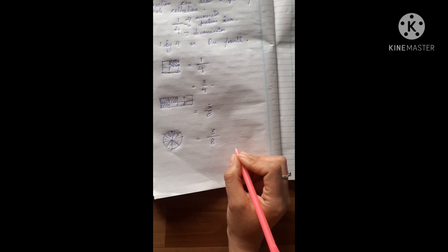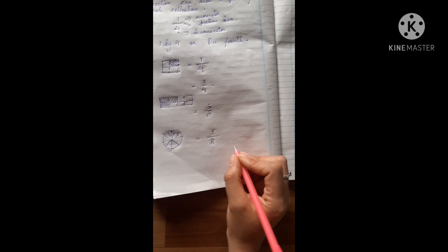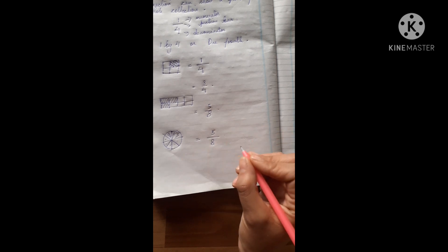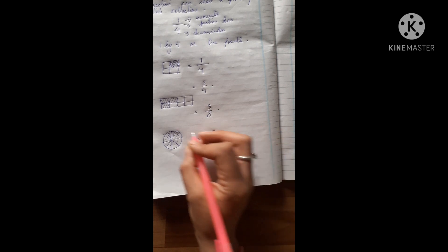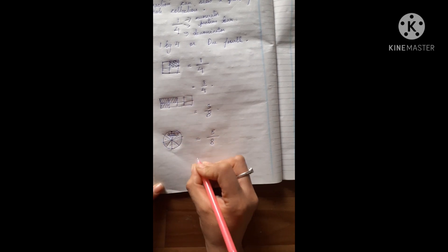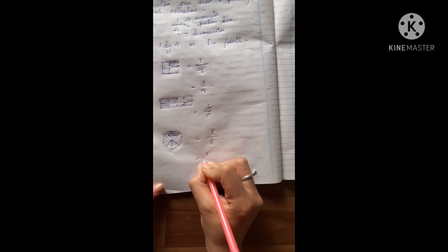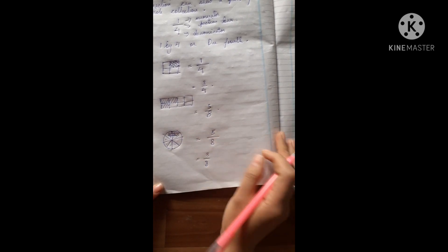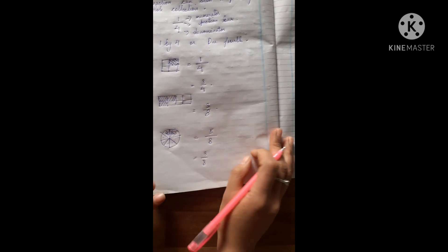And if the question asks you how many slices have you eaten? The answer is three by eight.